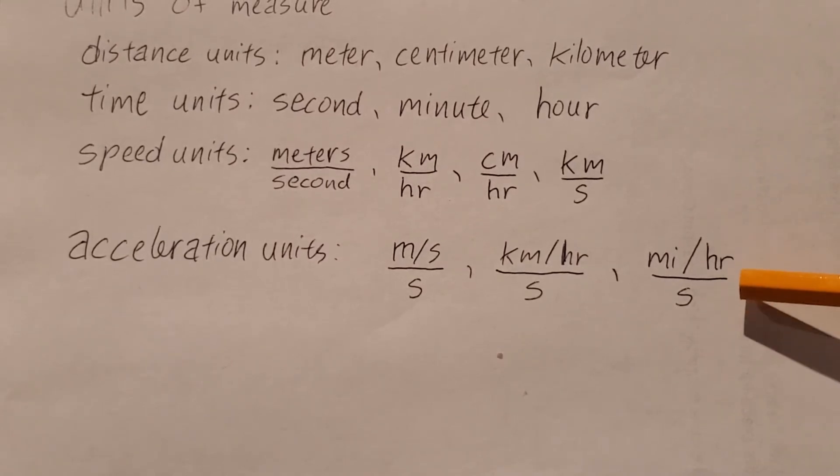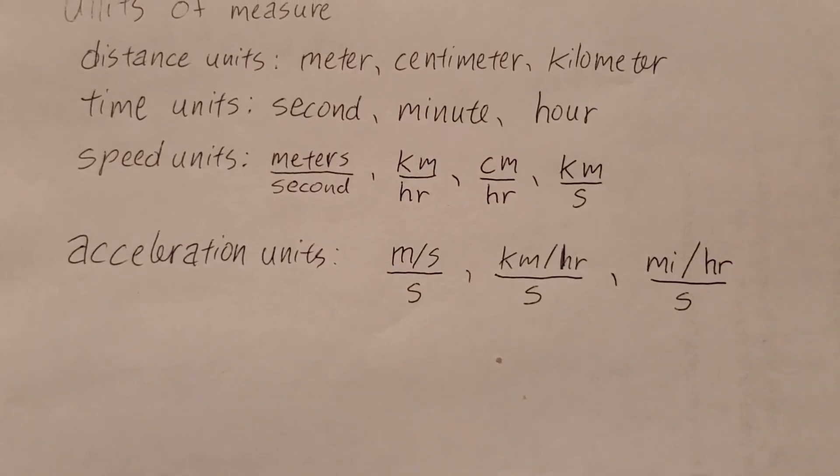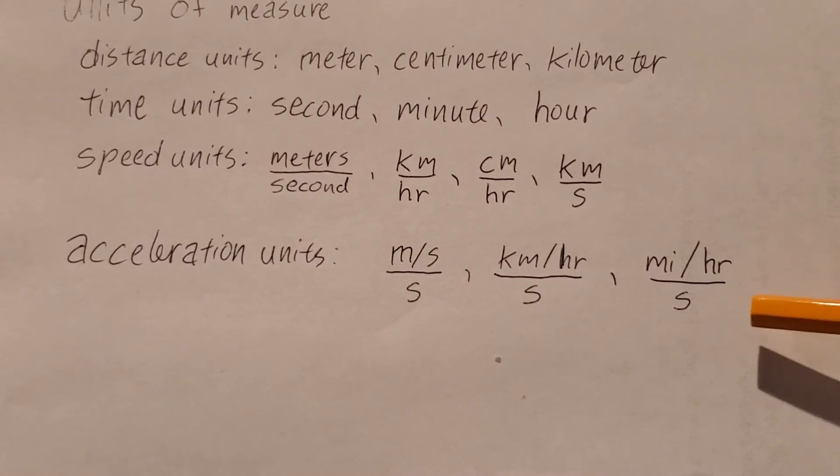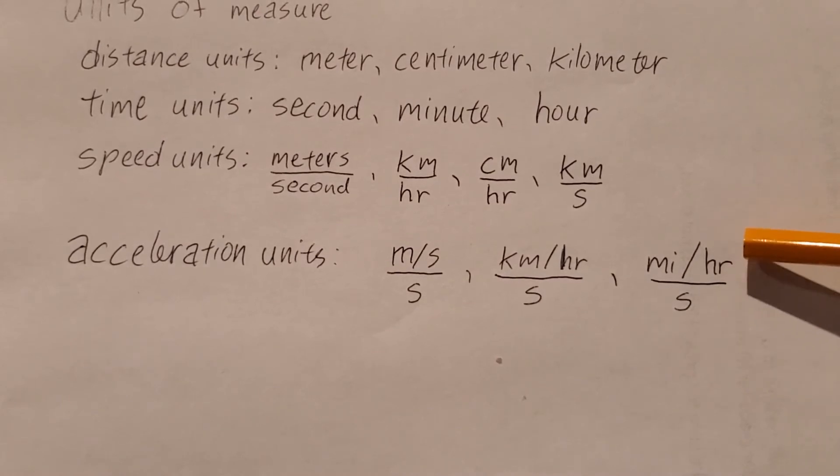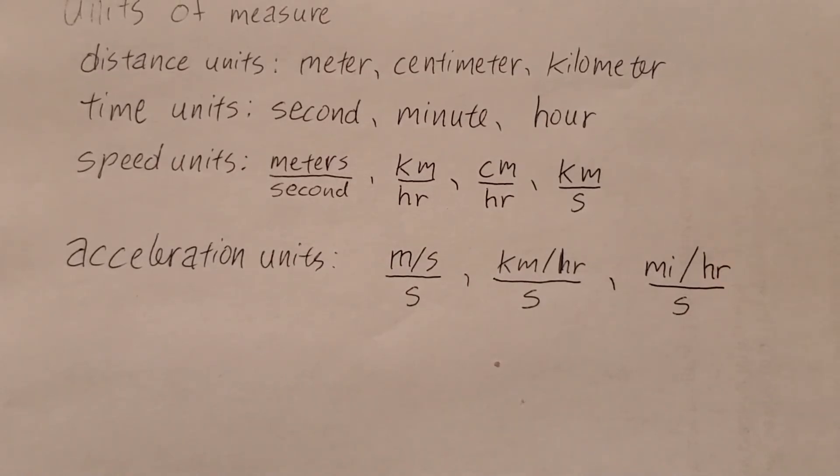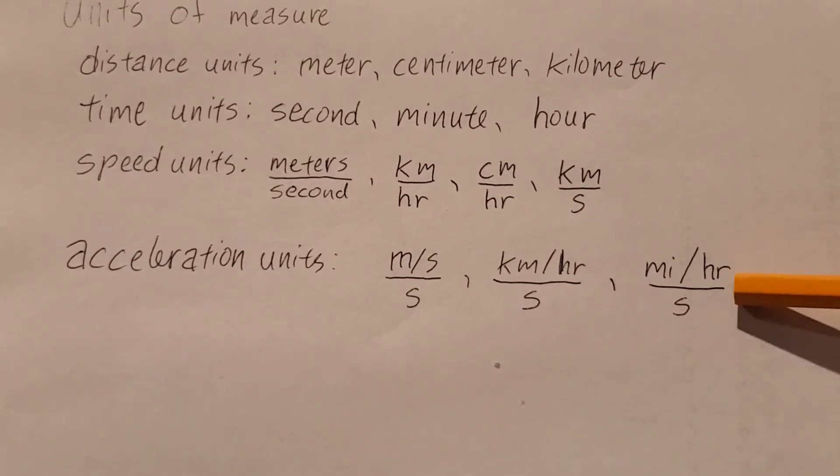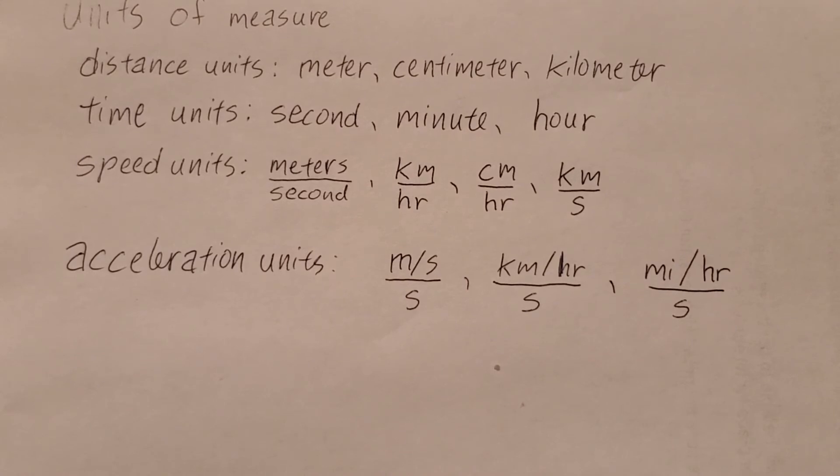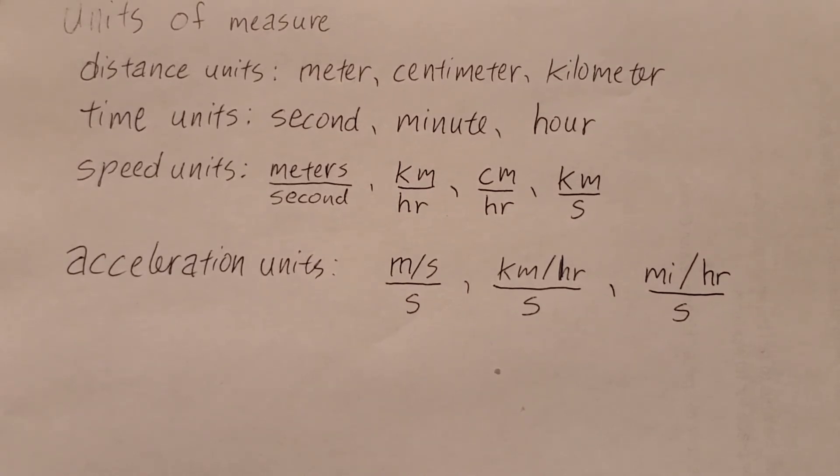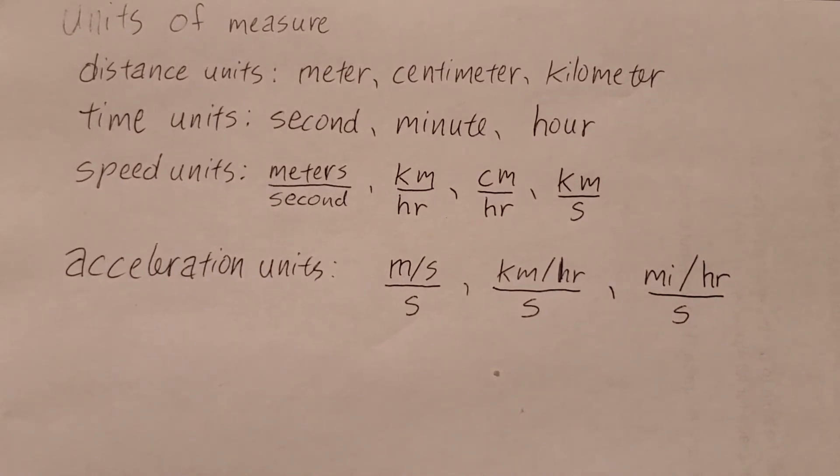So every second that goes by, your speed changes by a mile per hour. Let's think about a car that had an acceleration of one mile per hour per second. You hit the gas, you go from not moving. A second later, you're at one mile per hour. Two seconds later, two miles per hour. Three seconds later, three miles per hour. And so on. All the way until after 60 seconds, you'd be at 60 miles per hour. Not a very impressive acceleration, but hopefully that gives you the idea.